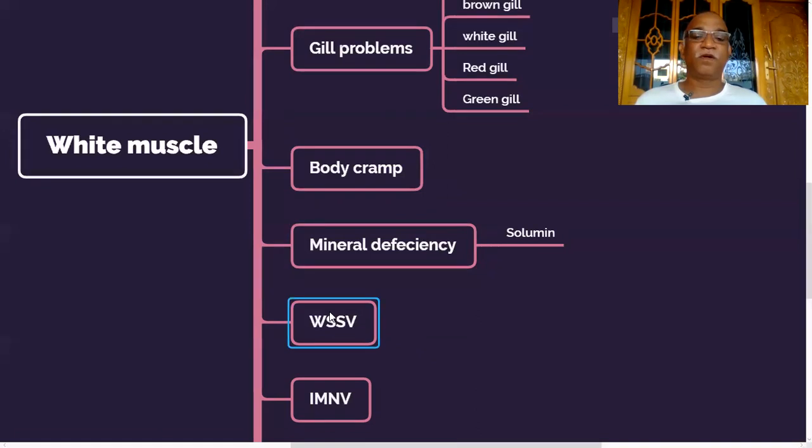And one more reason for white muscle is white spot syndrome virus. White spot syndrome virus affects several body parts, including gills. There will be damage internally to the gill tissue so that they cannot efficiently transfer oxygen to the distal parts of the body. So especially the tail becomes white in case of white spot syndrome virus.